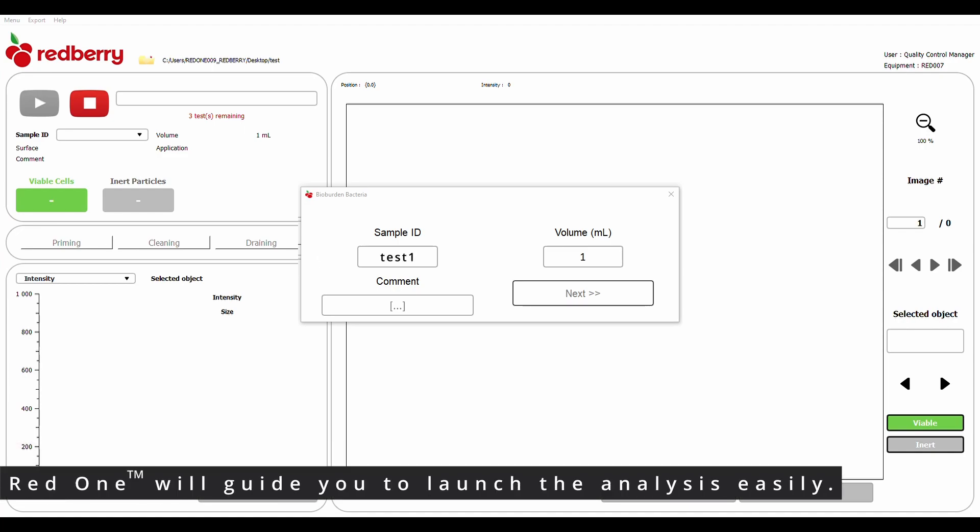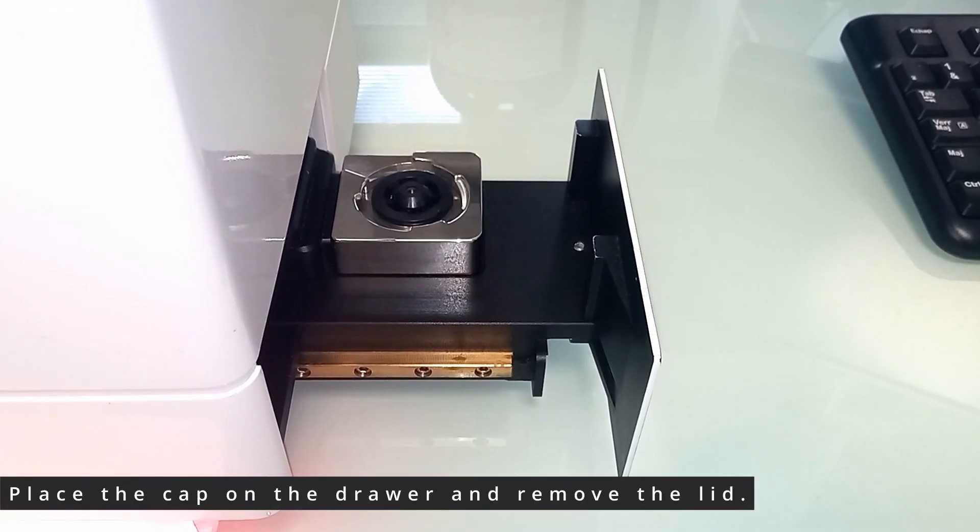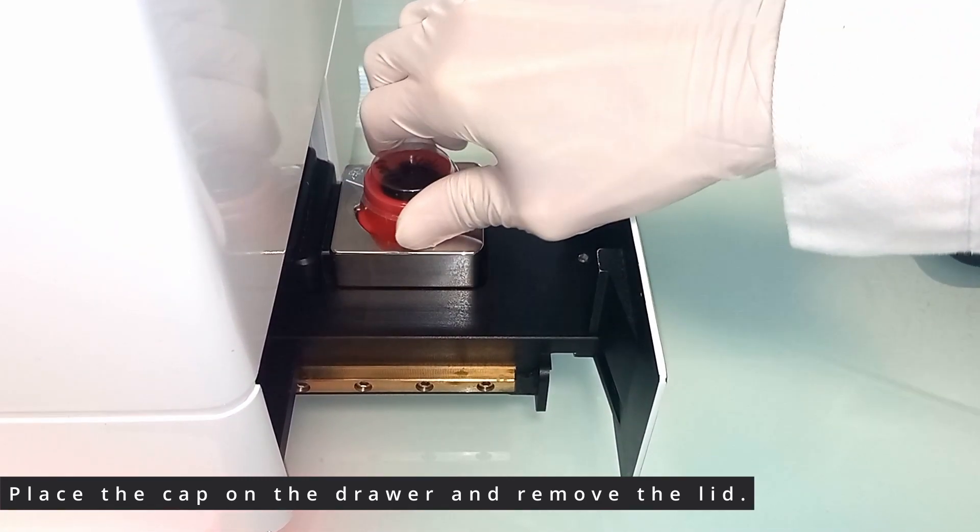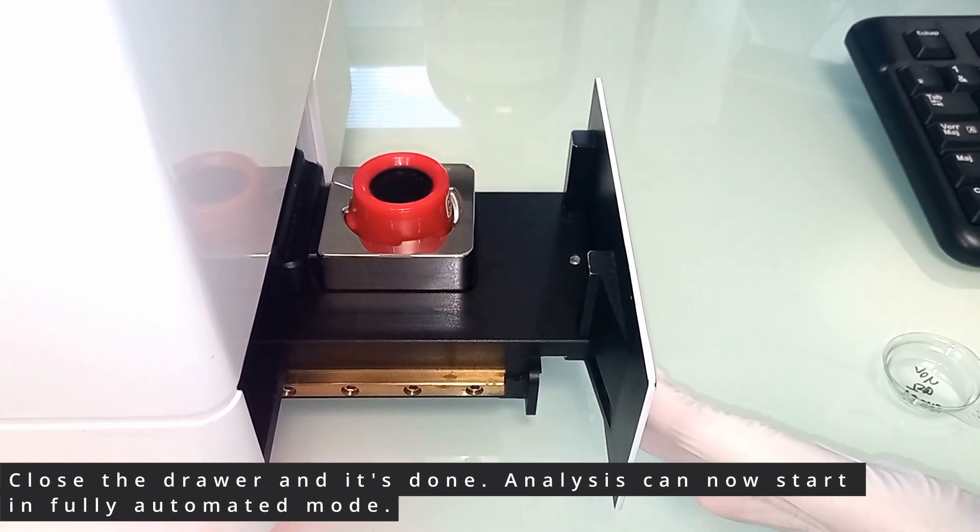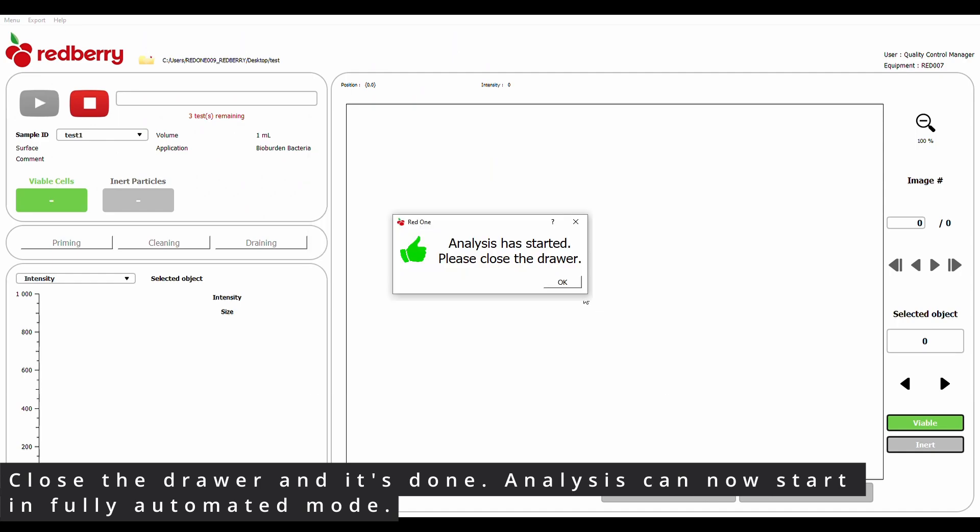RedOne will guide you to launch the analysis easily. Place the cap on the drawer and remove the lid. Close the drawer and it's done. Analysis can now start in fully automated mode.